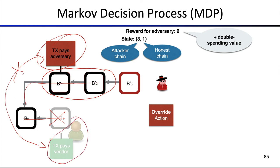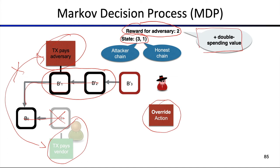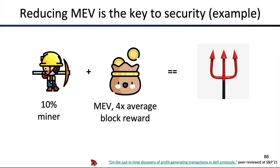This works as long as the vendor accepted the transaction after one block confirmation. In this MDP framework, we have a state space — in this case 3,1 — an action space including actions like 'override' or 'wait', and a reward we can specify: two block rewards plus a double spending value. This is a powerful tool to model how a blockchain operates, and once you have this model you can plug in additional parameters and rewards.